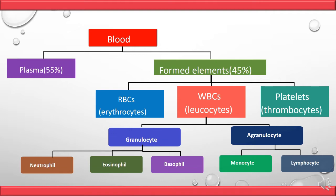Leukocytes are classified into two types based on the presence of granules in the cytoplasm: granulocytes, which have granules in the cytoplasm (three types: neutrophils, eosinophils, basophils), and agranulocytes, which have no granules in the cytoplasm (two types: monocytes and lymphocytes).